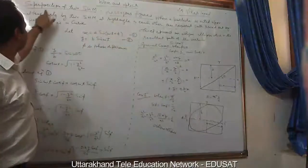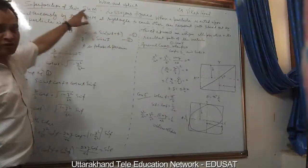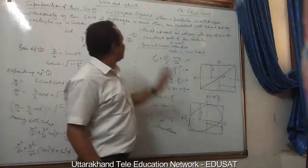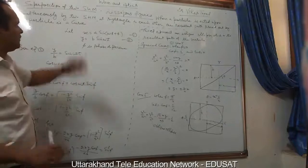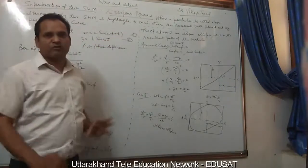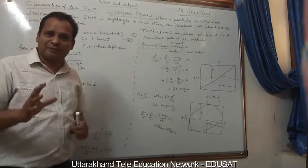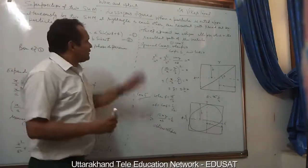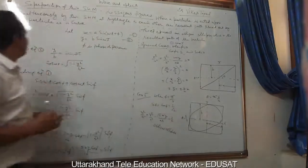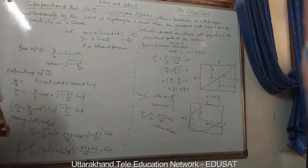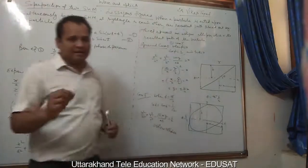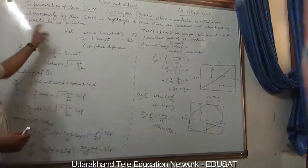This is waves and optics, chapter: superposition of two simple harmonic motions. We need to understand the meaning of the Lissajous figure. This occurs when a particle is acted upon simultaneously by two simple harmonic motions at right angles to each other, and the resulting path traced out by the particle is a trajectory known as a Lissajous curve.